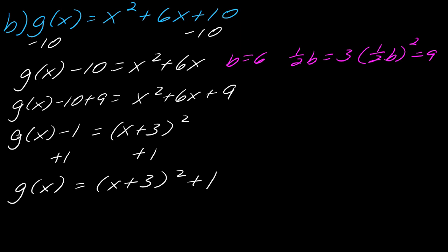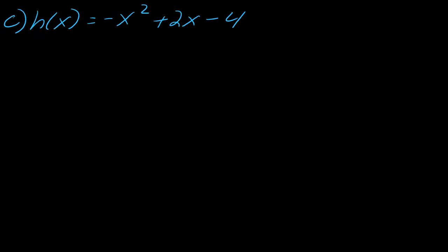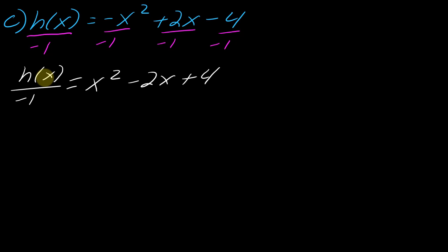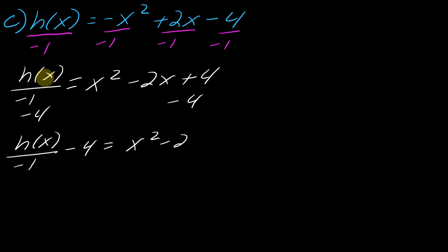Now let's work on some where we actually have to divide stuff out. Here, I do not have a leading coefficient of one, so I have to divide everything by negative one to get started — you've got to do that or it's going to throw everything else off. I'm just going to leave this as a placeholder with negative one. Now I need to isolate the x's, so I can subtract the four from each side: h(x) over negative one minus four equals x squared minus 2x.